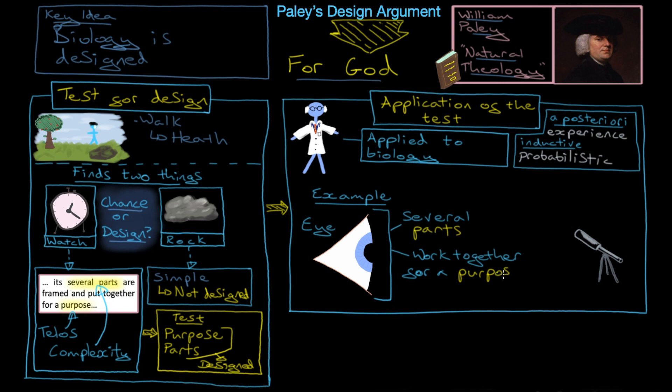The cornea, the retina, and so on. And they all work together for a purpose. So this purpose is not some sort of great overall purpose that we can't name. It's a really obvious, clear, identifiable telos, right? It is to see.